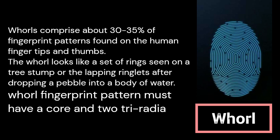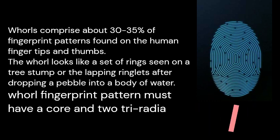The third type of fingerprint pattern is called a whorl. Whorls comprise the second most predominant type of fingerprint pattern in terms of occurrence after loops. In a whorl, the ridges curve around a point called the core in the form of concentric rings or in the form of spiral rings. A whorl always has two triradii on the two sides of the finger.